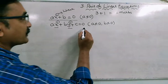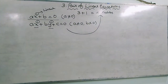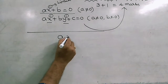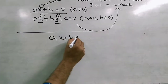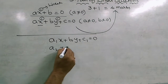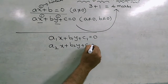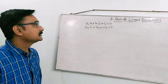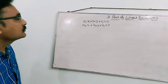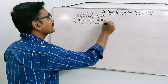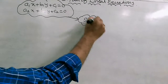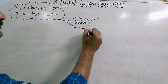Now, coming to our chapter, pair of linear equations — the meaning of pair is nothing but 2. The general form of pair of linear equations is: a1x plus b1y plus c1 equals to 0, and a2x plus b2y plus c2 equals to 0. In this session, we are going to learn how to solve the pair of linear equations. To solve these, we have two methods.